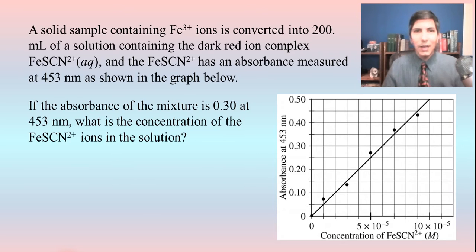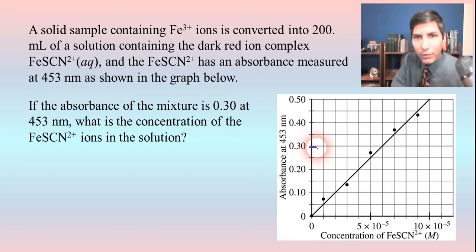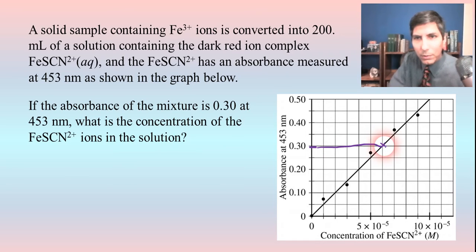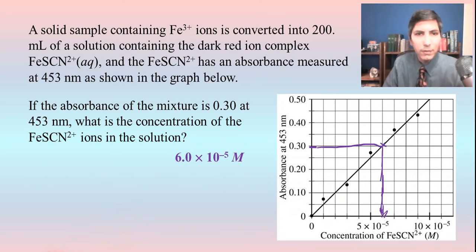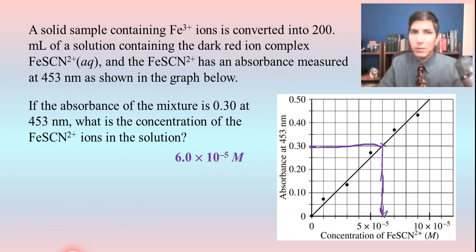Once again, all we have to do is just read the graph. So 0.3 is right here, and we slide that over to the line. We drop that down and it seems to be right at six, so I'd say about 6.0 times 10 to the negative fifth moles per liter. That's the concentration — just read the graph.